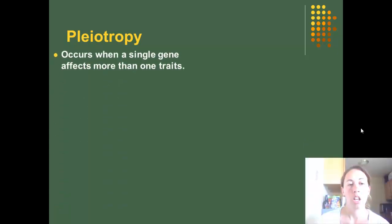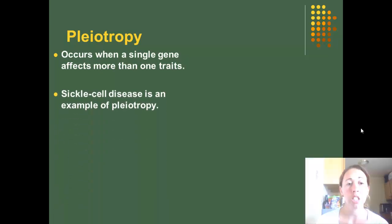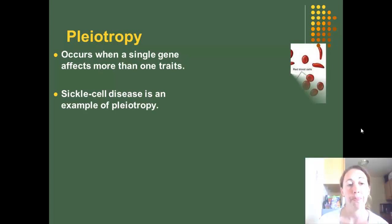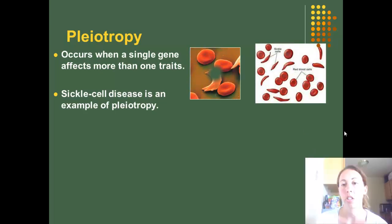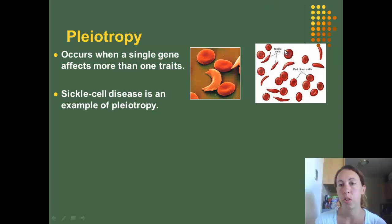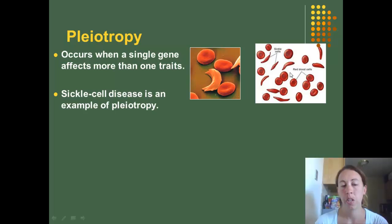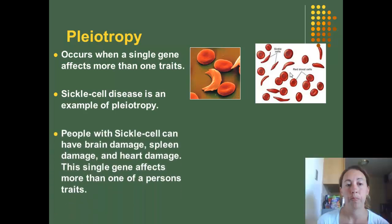Pleiotropy occurs when a single gene affects more than one trait. Sickle cell disease is an example of pleiotropy. Here's a picture of sickle cell — you have regular blood cells and then sickle cell's long, thinner cells. Sickle cell can cause people to have brain damage, spleen damage, and heart damage.